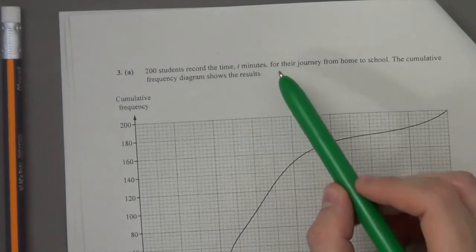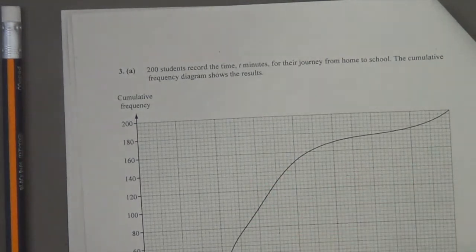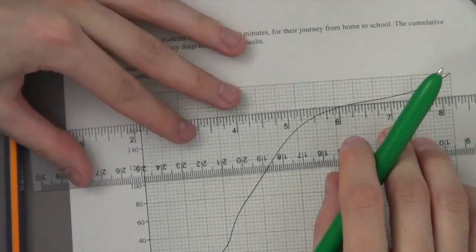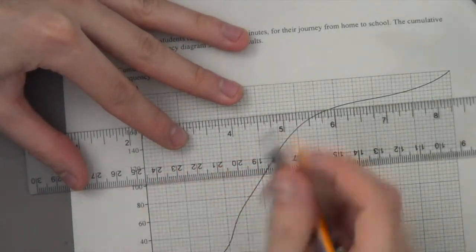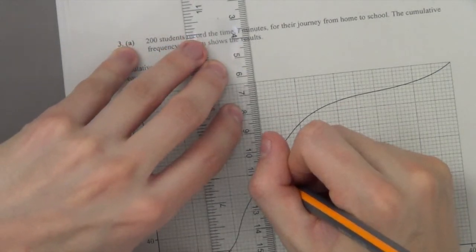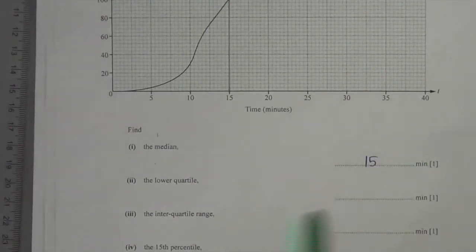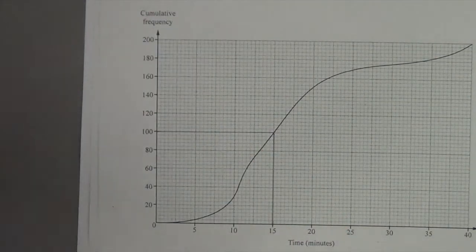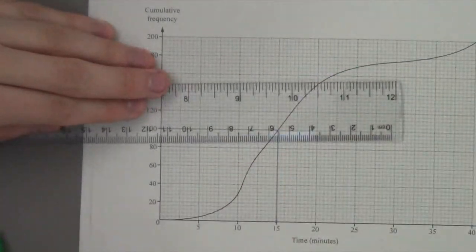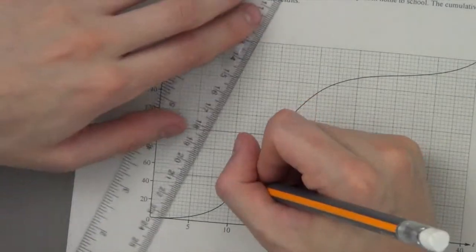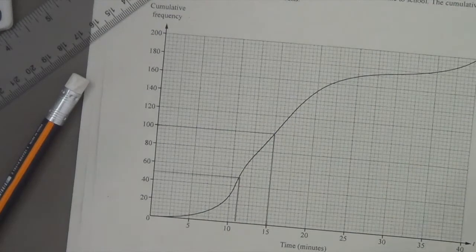200 students record the time t minutes for their journey from home to school. The cumulative frequency shows the results. Find the median: first we find 50% of 200, which is 100. Then we draw a line from the 100 point across to the graph — it looks like 15 — so the median is 15 minutes. The lower quartile is 25% of the cumulative frequency: 0.25 times 200 is 50, and that line gives us 11 minutes.